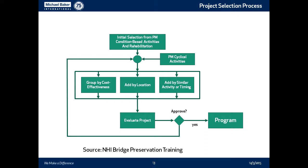The process is pretty much the same: you get an initial selection from the preventive maintenance condition-based activities, which you can get with Timetopour or BRM. You add your cyclical activities, because those are based on triggers and frequency. Then the analysis comes in — you group by cost effectiveness, and every work item should have a benefit-cost ratio. You combine by location and may add by similar activity or timing, because you may want to delay or advance projects due to timing, especially with weather constraints for certain activities like joint work.